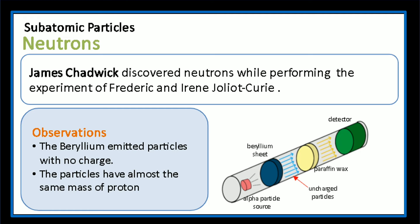James Chadwick discovered neutrons while performing the experiment of Frederick and Irene Joliot-Curie on gamma radiation projected at a paraffin wax. He observed that particles with no charge are emitted from the beryllium, and they have almost the same mass as that of the proton.